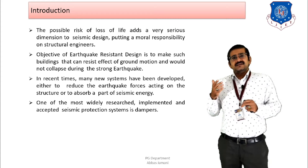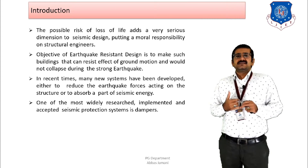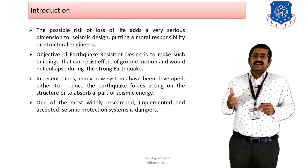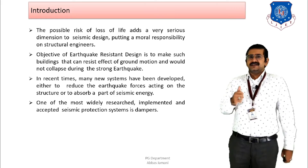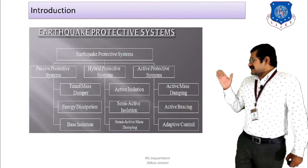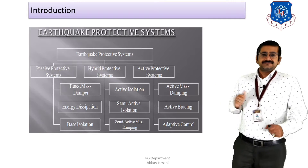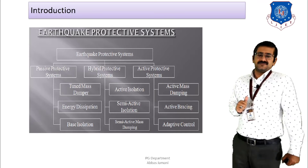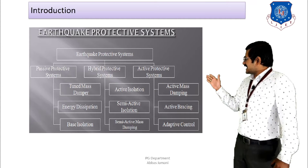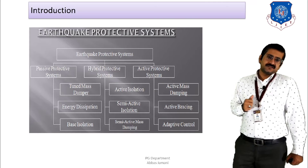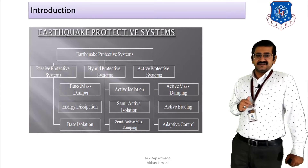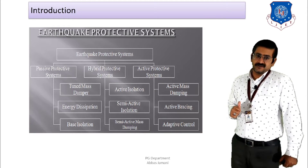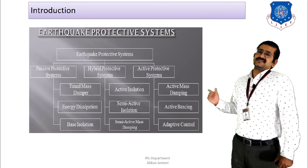The damper is one such system that is widely researched, implemented, and accepted in the field of structural engineering. Looking at the classification chart of earthquake protective systems, there are basically three heads: first is the passive protective system, second is the hybrid protective system, and third is the active protective system. Under the passive protective system, the first is the tuned mass damper, second is energy dissipation, and third is the base isolation method.